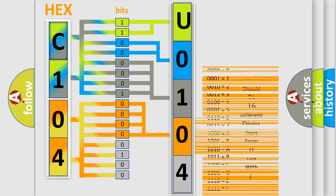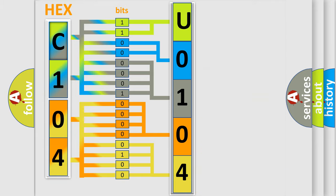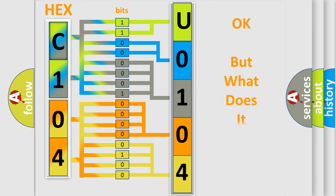A single byte conceals 256 possible combinations. We now know in what way the diagnostic tool translates the received information into a more comprehensible format. The number itself does not make sense to us if we cannot assign information about what it actually expresses.